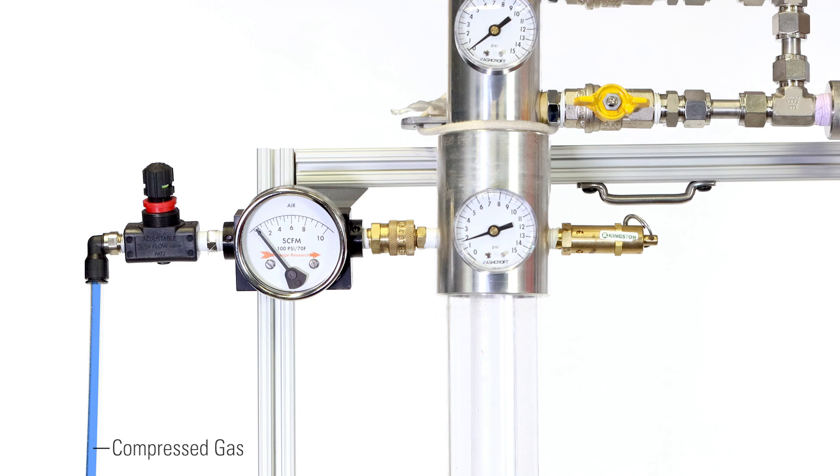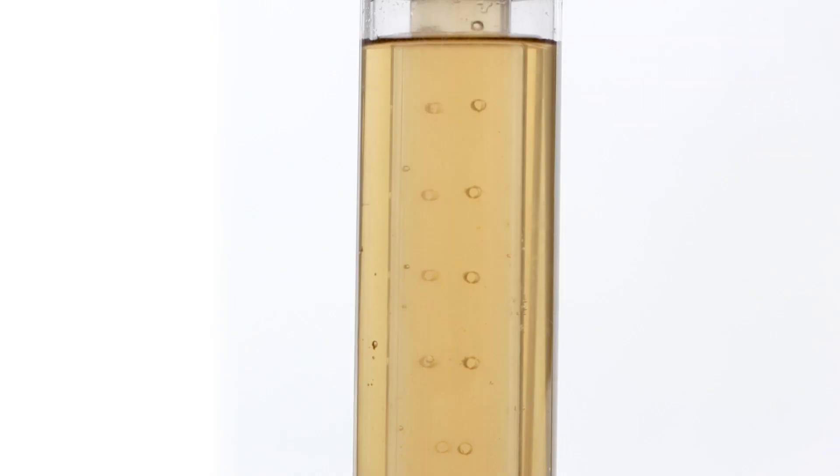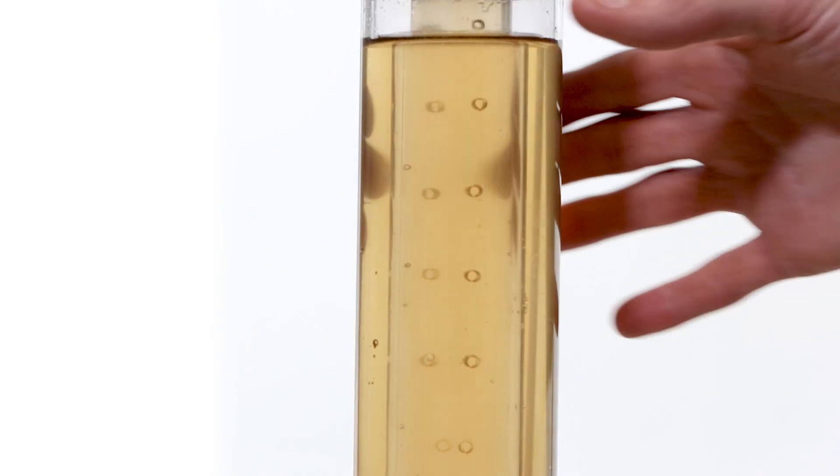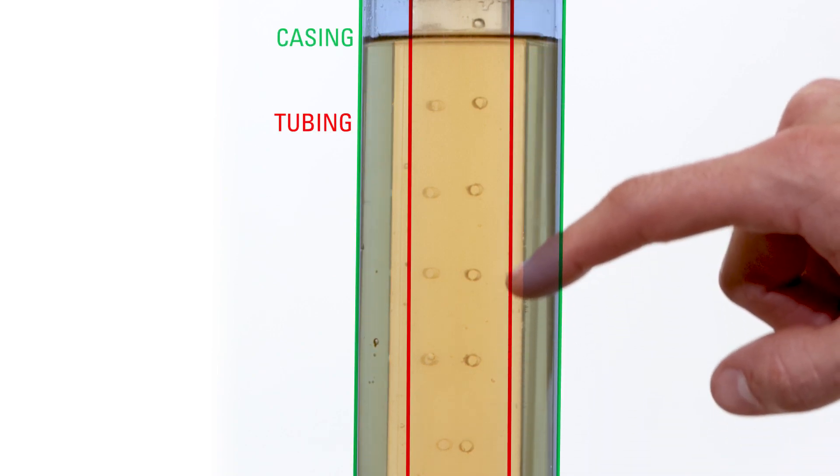This represents compressed gas being injected into the casing. So that pressure travels down the well and it enters the tubing through perforations. So it travels down the casing and enters the tubing, pressurizes the well.